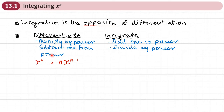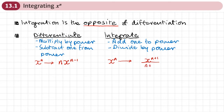So instead of subtracting 1 from the power, we're going to add 1 to the power. So if you have x to the power of n and you want to integrate it, we add 1 to the power — that reverses the first step. Then the previous step in differentiation, which will be the last step in integration, was we multiplied by the power. So here we divide by the power, which is now n plus 1 because we did that first. And this is the process of integration — reversing differentiation.